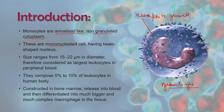Monocytes are mononucleated cells — mono means single, they contain a single nucleus, that's why they are known as mononucleated cells. The structure of the nucleus is horseshoe shape, or we can say bean-shaped or kidney-shaped. Their size may range from 15 to 20 micrometers in diameter.